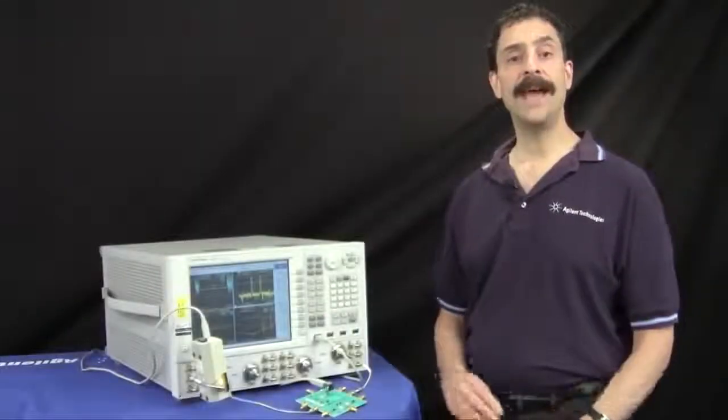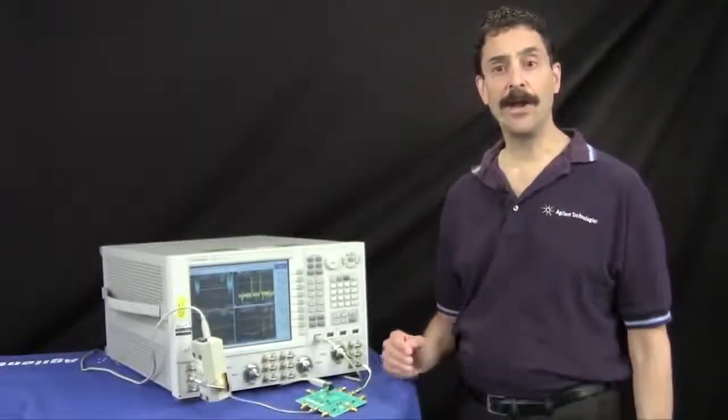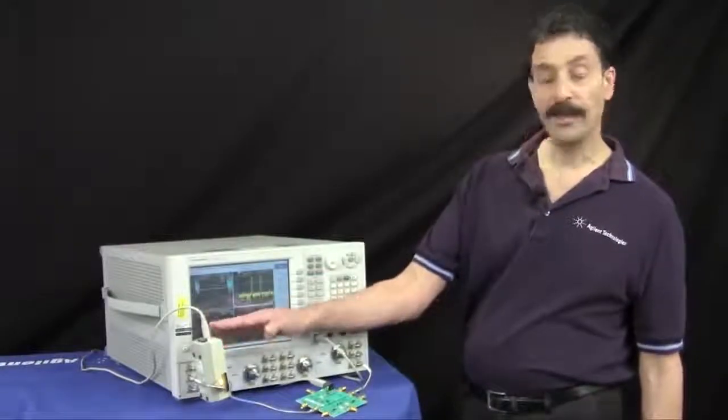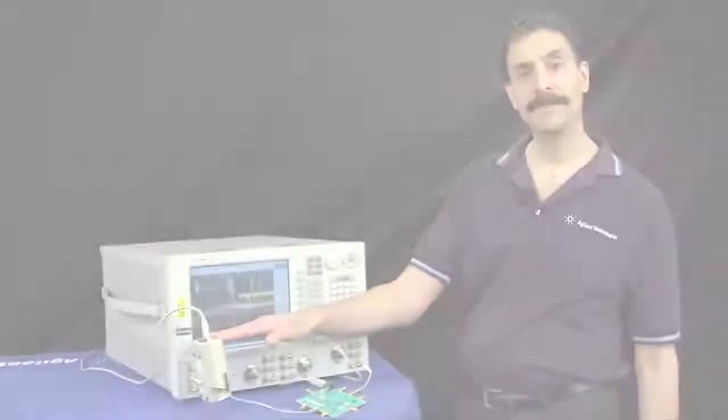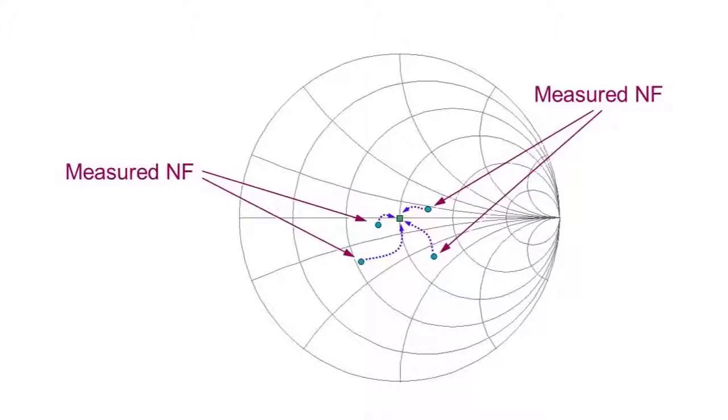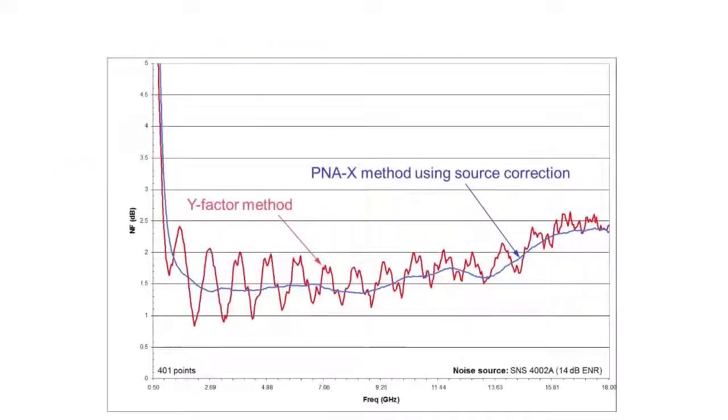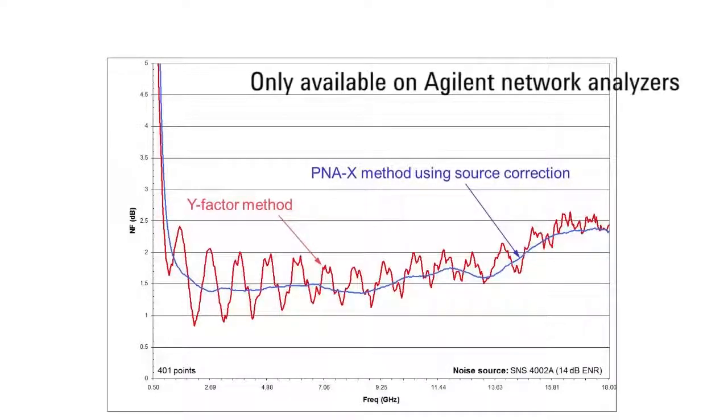The PNA-X corrects for this error by using a standard ECAL module as an impedance tuner. By varying the source impedance presented to the input of the DUT and measuring the resulting noise figures, accurate 50 ohm noise figure is calculated. This technique yields much higher accuracy than assuming a perfect 50 ohm source match, and is only available on Agilent network analyzers.